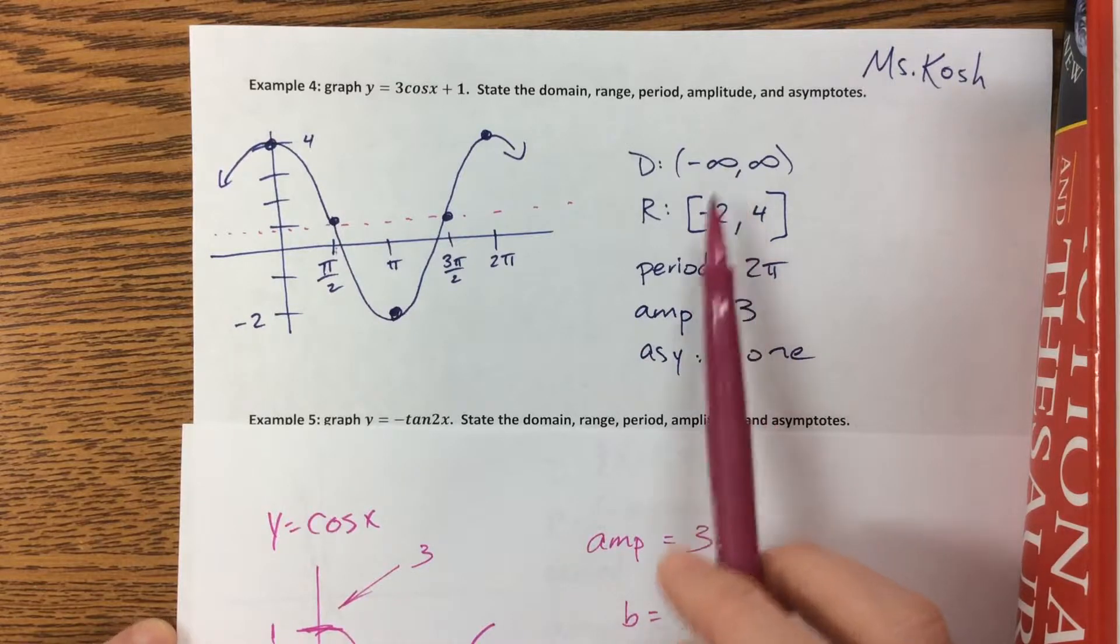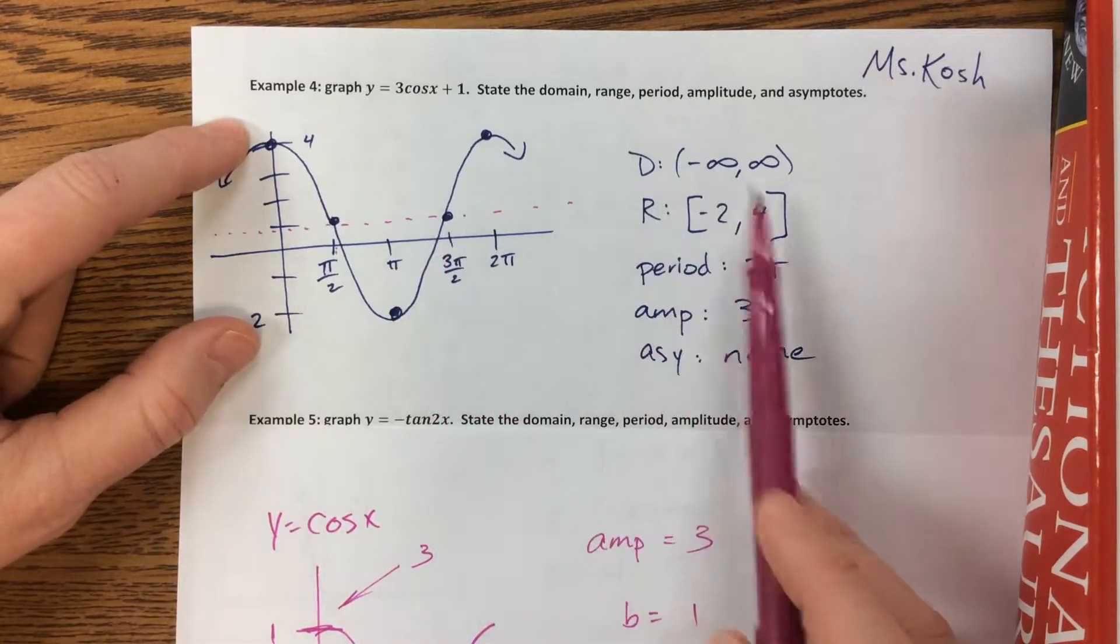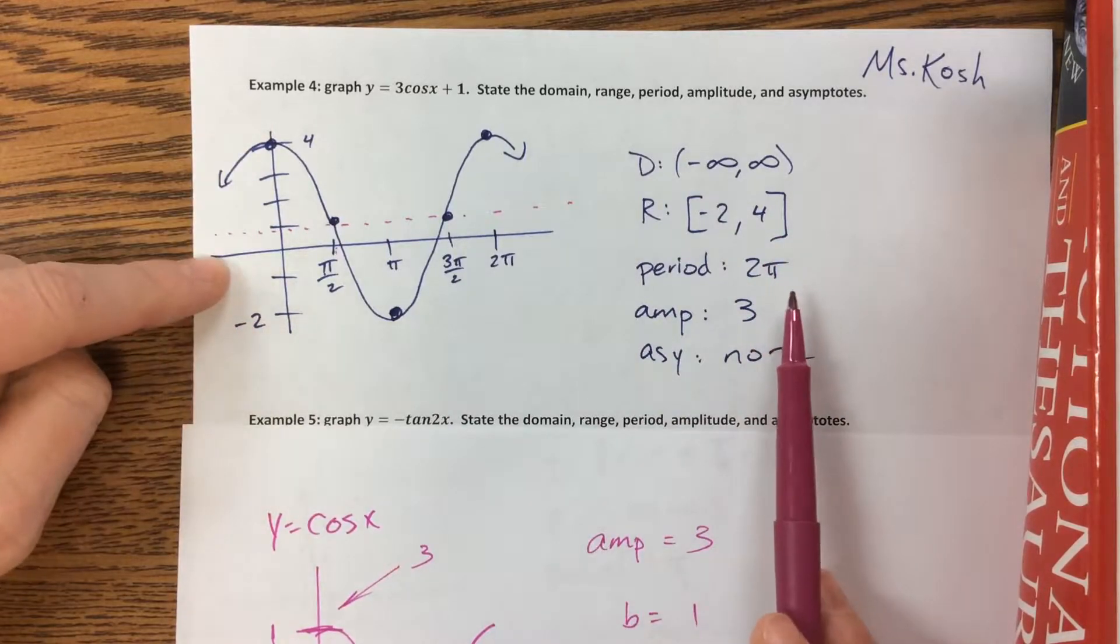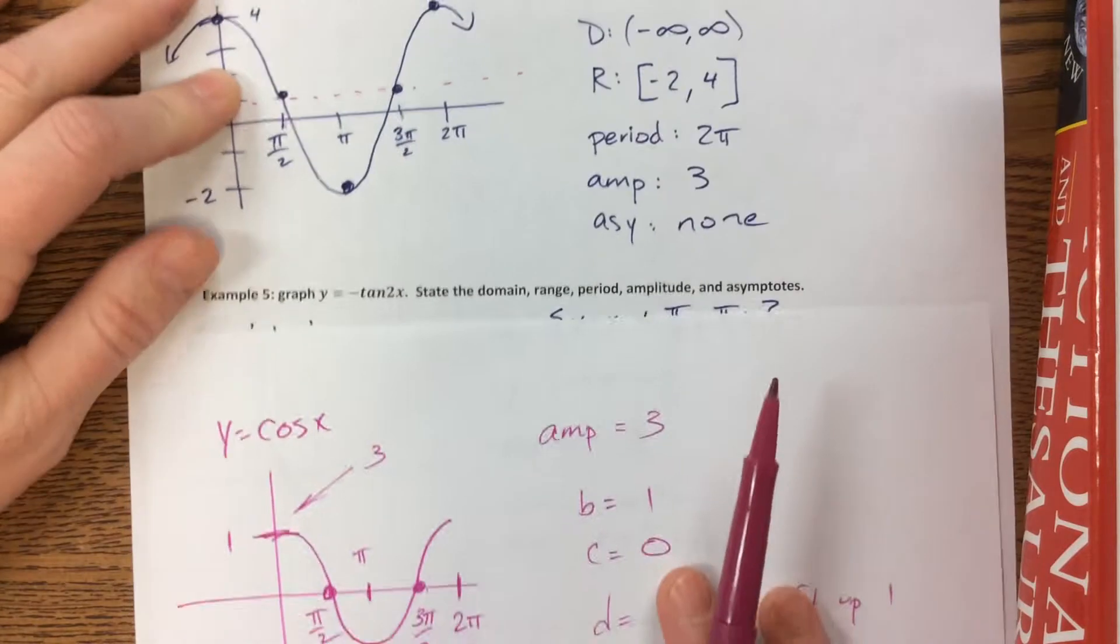So the domain is negative infinity to positive infinity because it's a cosine function. The range, we went as low as negative 2, as high as 4. The period didn't change, it's still 2π. The amplitude is 3, and there are no asymptotes.